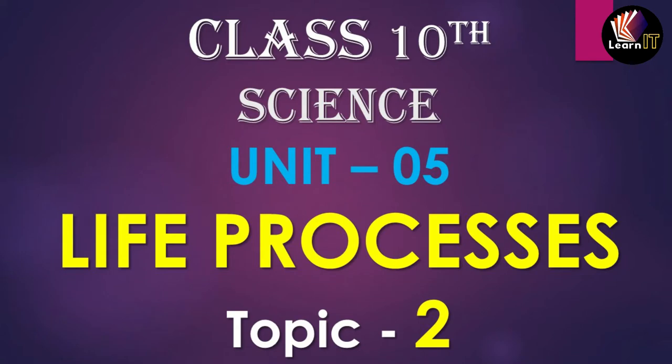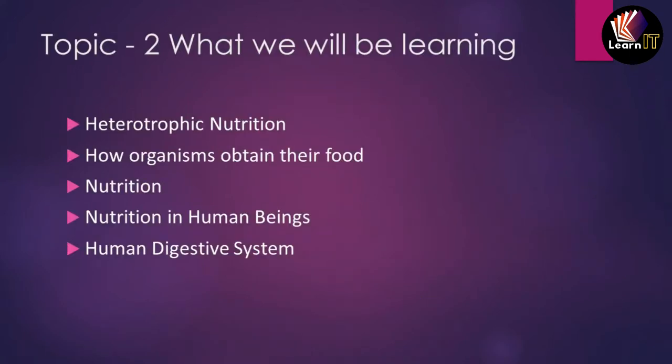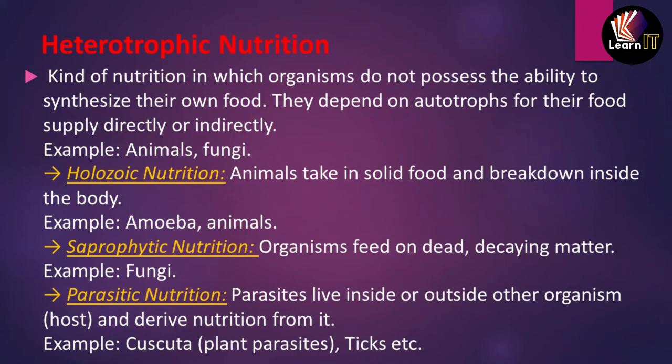Welcome to Learn It. Today we'll be discussing Class 10th, Topic 2 of Unit 5: Life Processes. The topics we'll be learning today are five in number: heterotrophic nutrition (autotrophic has already been discussed), how organisms obtain their food, nutrition in human beings, and how the human digestive system works.